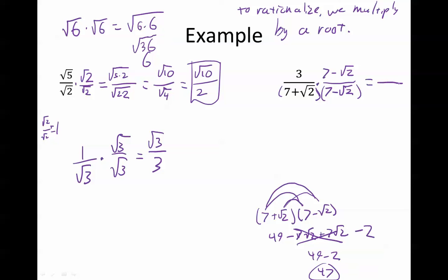So in the denominator here, we get 47 because I multiplied by this with a negative. The 3 we distribute, 21 minus 3 root 2, and then we're done.